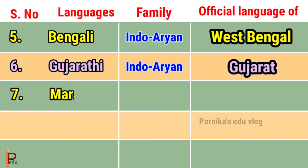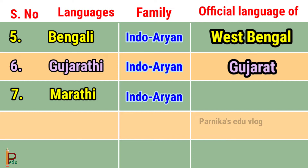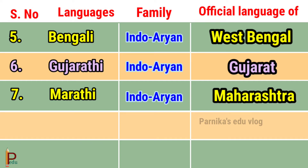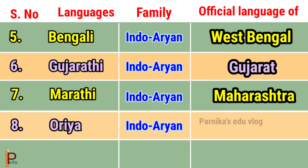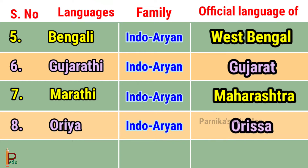Language Odia belongs to the Indo-Orient family and is the official language of Odisha. Language Marathi belongs to the Indo-Orient family and is the official language of Maharashtra.